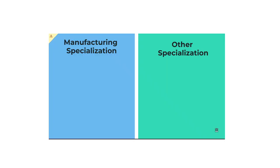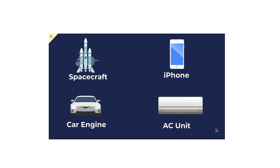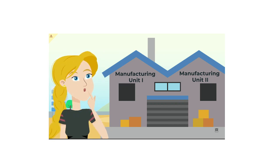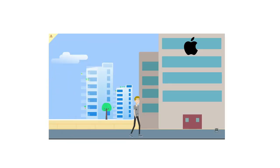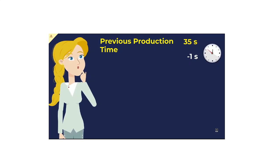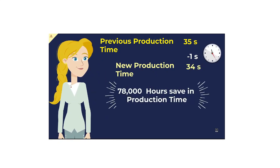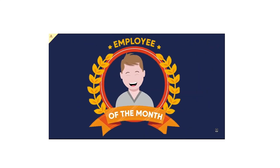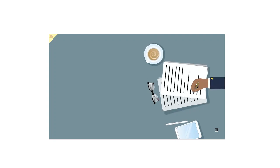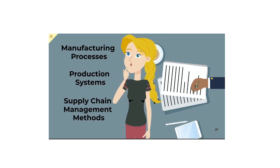Manufacturing courses are super important whether you specialize in manufacturing or not, because every single object needs to be manufactured somewhere. For example, imagine you're a mechanical engineer at Apple working on the next iPhone. Using your manufacturing knowledge, you design a new connector that saves a full second off the previous 35-second production time — saving the company 78,000 hours of production time annually on 280 million units. You should take great notes on manufacturing processes, production systems, and supply chain management.